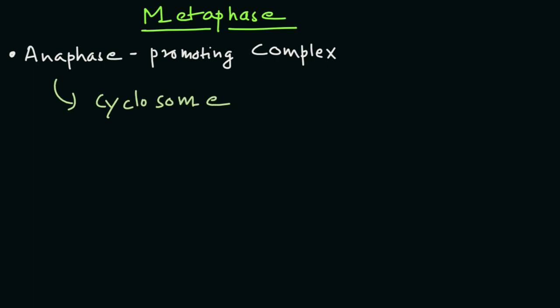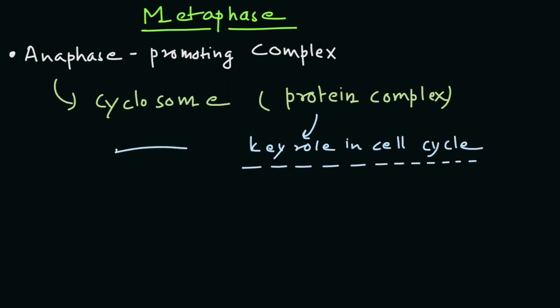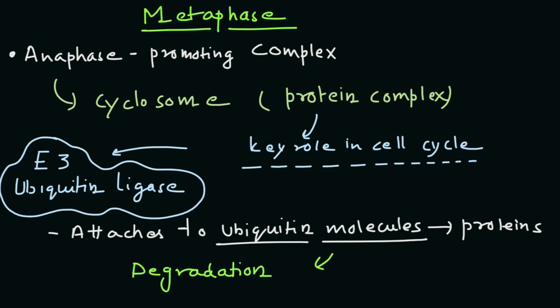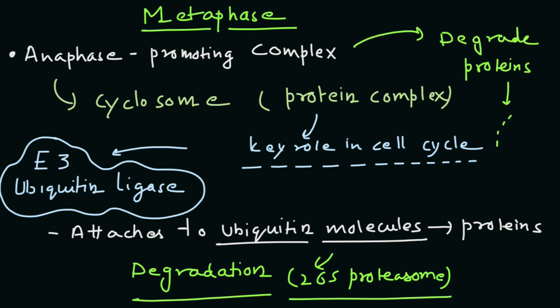Anaphase promoting complex, also known as the cyclosome, is a protein complex that plays a crucial role in the cell cycle. It acts as an E3 ubiquitin ligase, which means it attaches ubiquitin molecules to proteins, marking them for degradation by the 26S proteasome. In simpler terms, the anaphase promoting complex plays a key role in controlling the cell cycle by selectively destroying certain proteins.